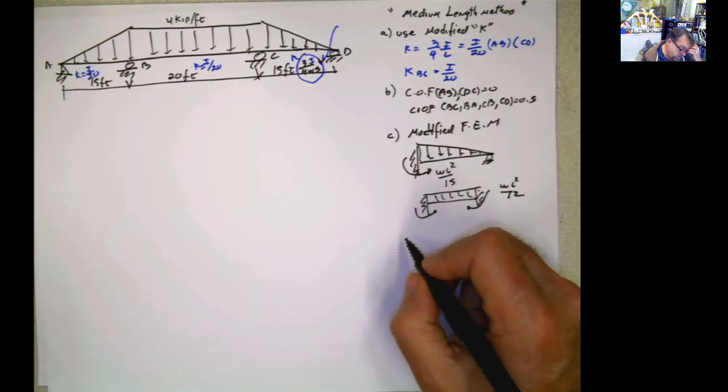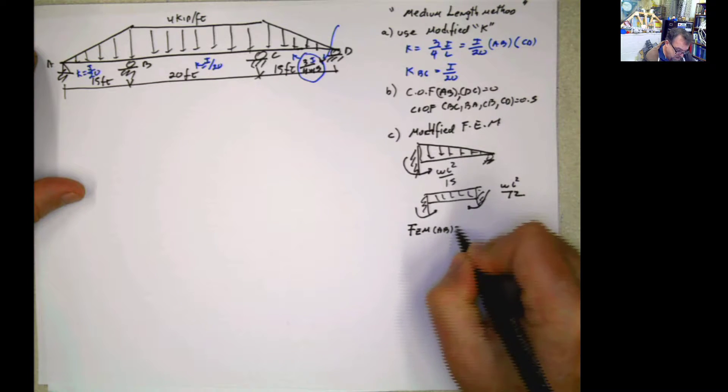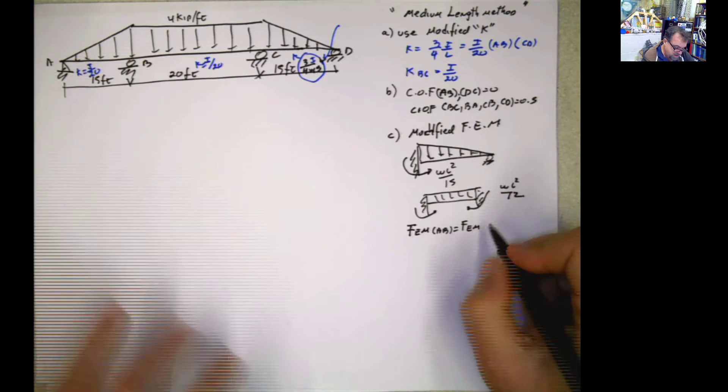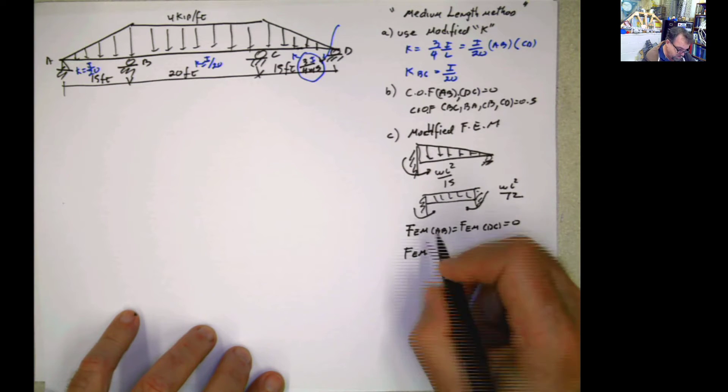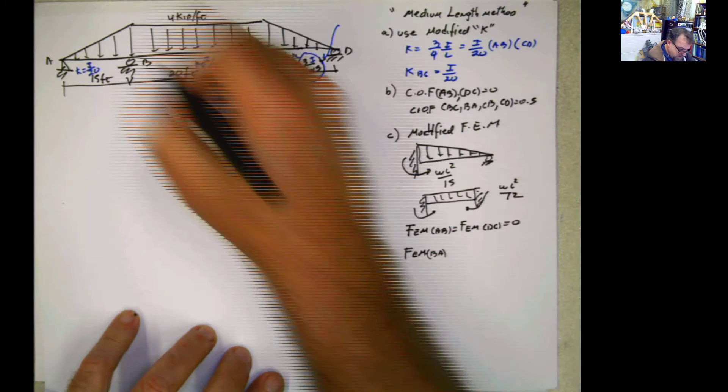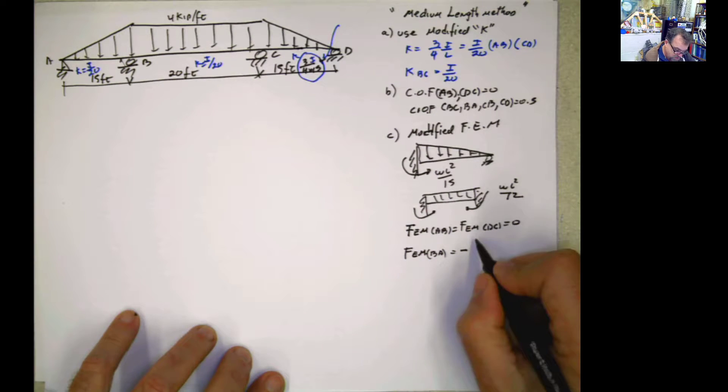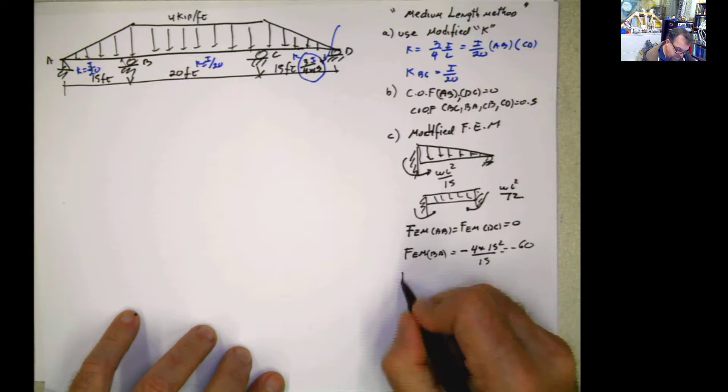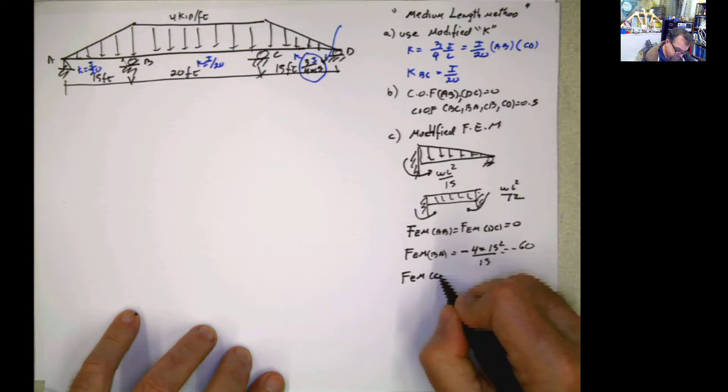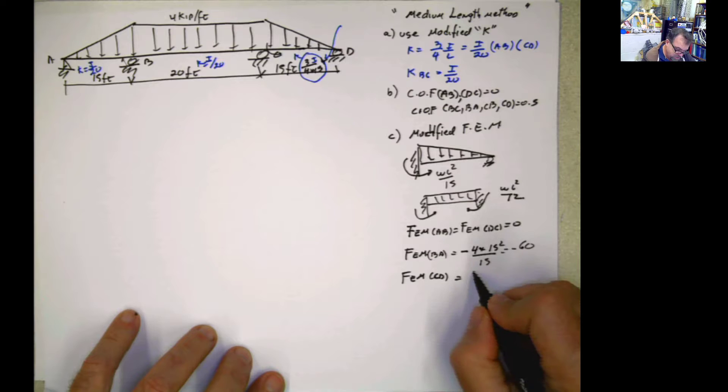So then the fixed end moment for this part here is going to be, let's start with the fixed end moment. Fixed end moment AB and fixed end moment DC, 0, 0 and 0. The fixed end moment BA, it will be like this, right? So it's going to be negative. Negative WL squared divided by 15, negative 2 times 15 squared divided by 15, which is negative 60. Fixed end moment CD is going to be like this, exactly. So it's going to be positive 60.